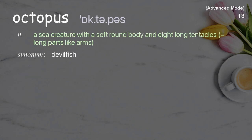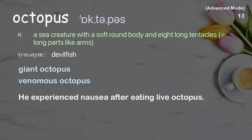Octopus: a sea creature with a soft round body and eight long tentacles (long, arm-like parts). Examples: giant octopus. He experienced nausea after eating live octopus.